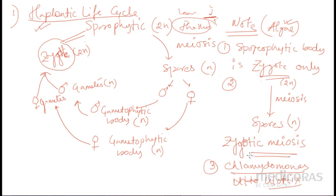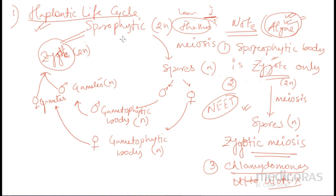Next, we will see what is in the diplontic life cycle. The haplontic life cycle is represented by algae. Sporophytic body is the only zygote in case of algae. The first stage of sporophytic generation is the zygote, and the first stage of gametophytic generation is the spore. These are important exam-based questions for NEET or medical entrance. Prepare these important questions in one place so that you will be able to learn easily.